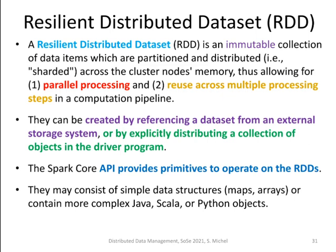RDDs are immutable collections of data. They can be partitioned and distributed — we also call that sharding — across the nodes of a compute cluster. The data sets are kept in memory, and by this abstraction, they allow parallel processing and reuse across multiple processing steps. Some example illustrations will come later on.